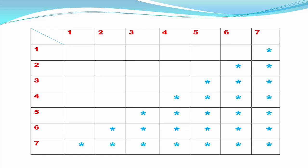Here we take a 7x7 matrix. These are the rows of the matrix and these are the columns. You can see here: first row has one star, second row has two stars, third row has three stars, fourth row has four stars, and so on. The general rule is: the number of stars in each row is equal to the row number.